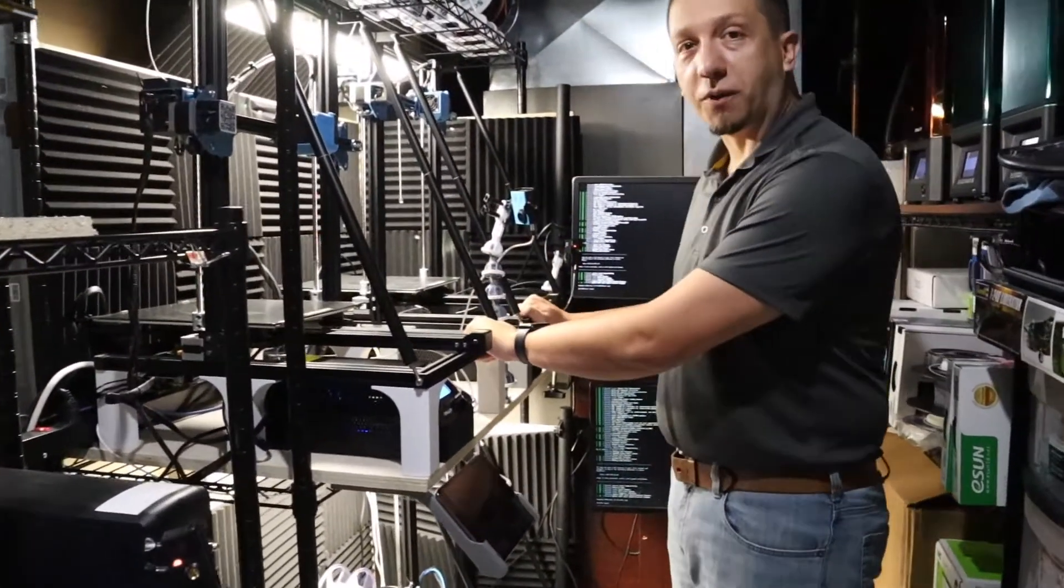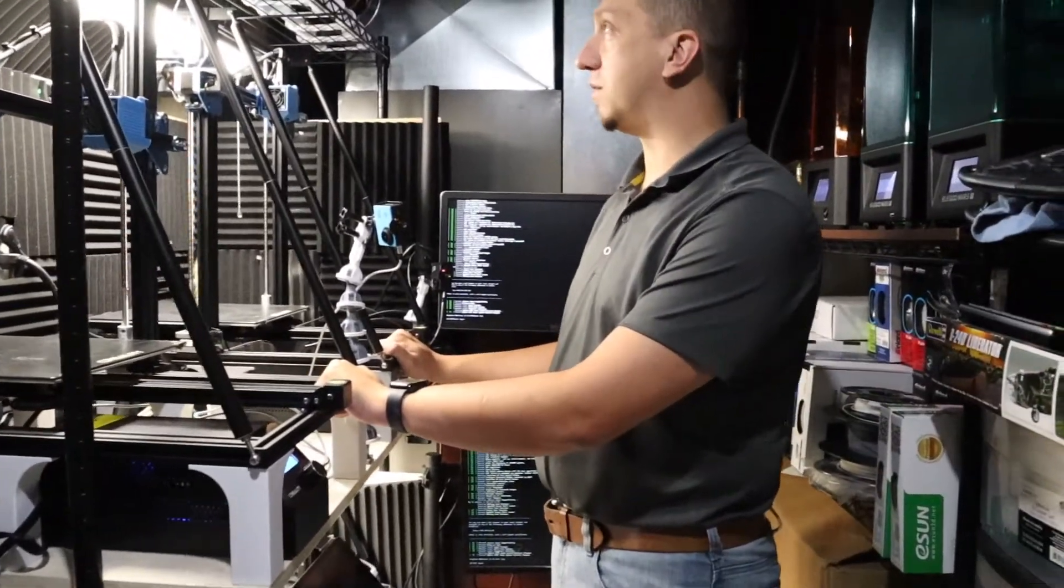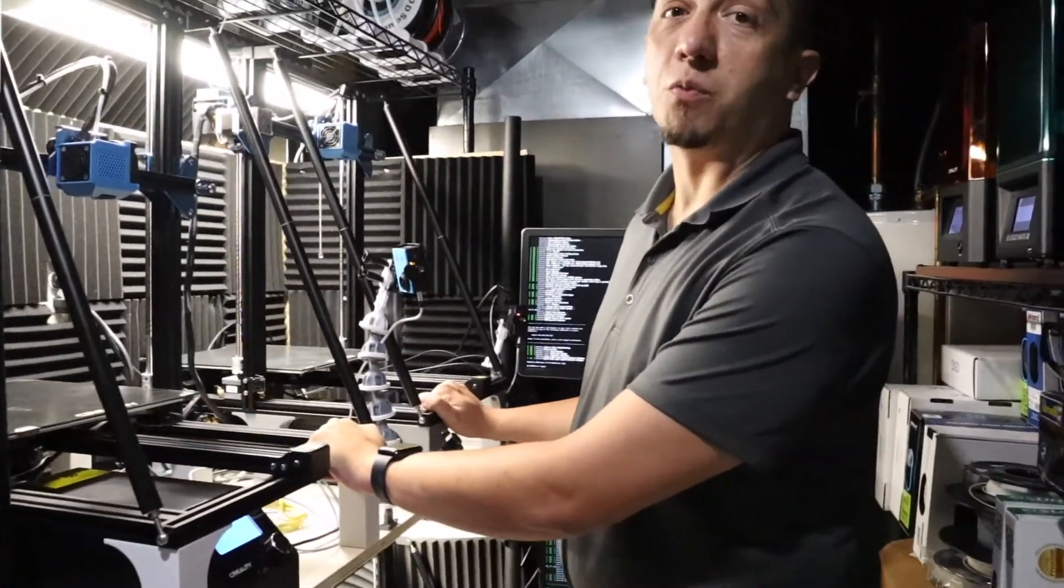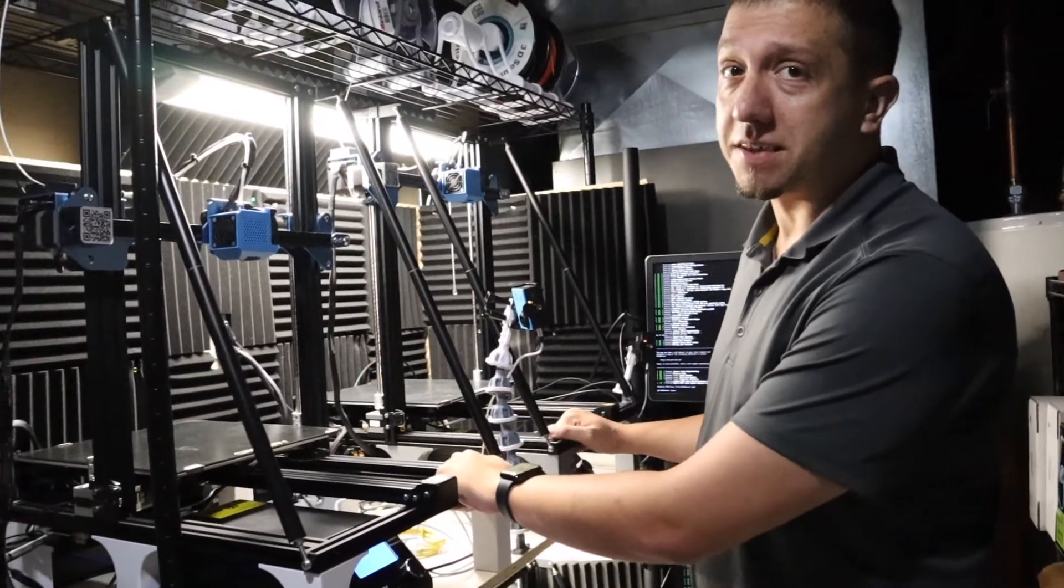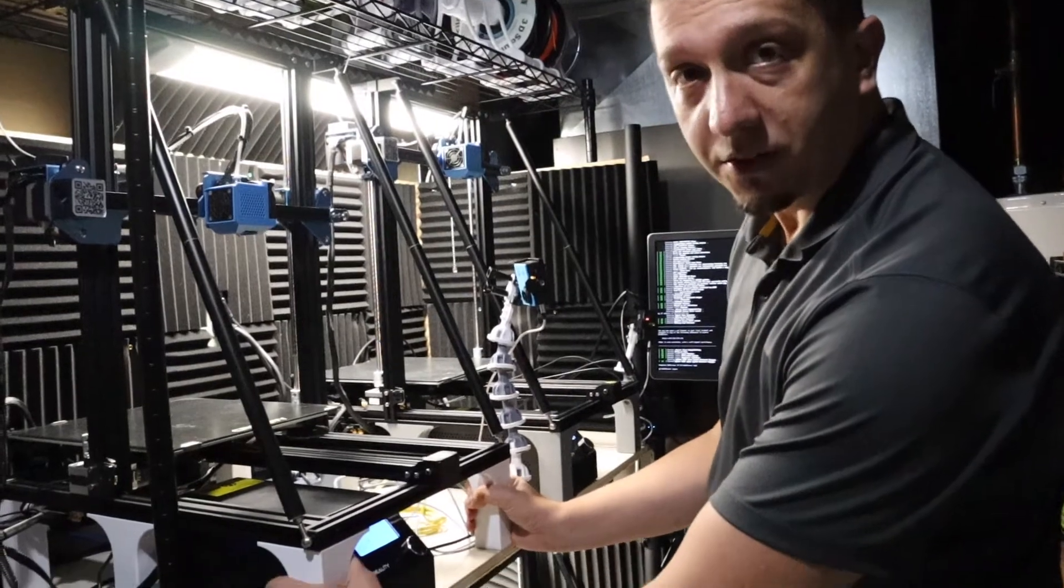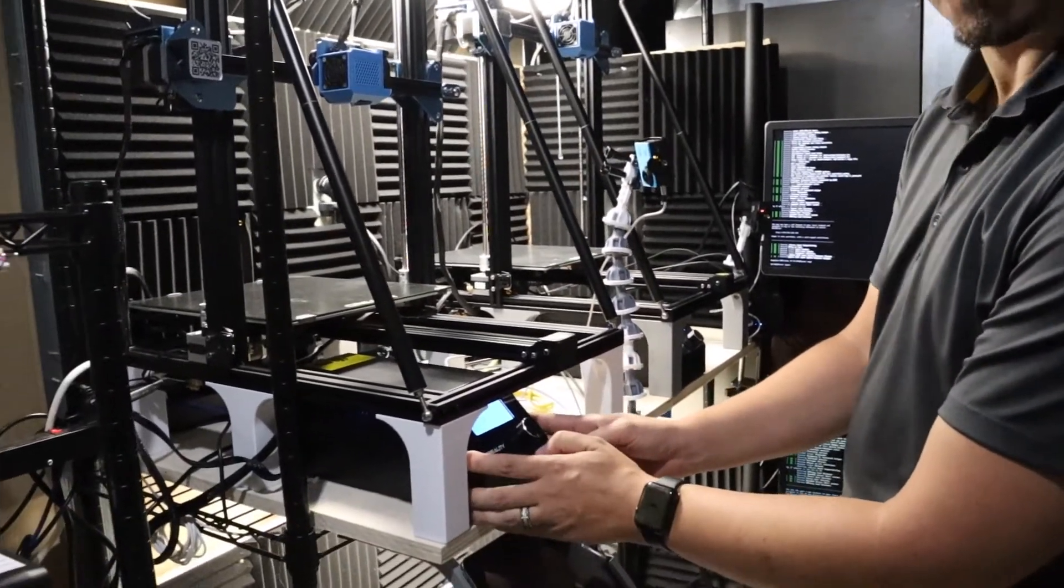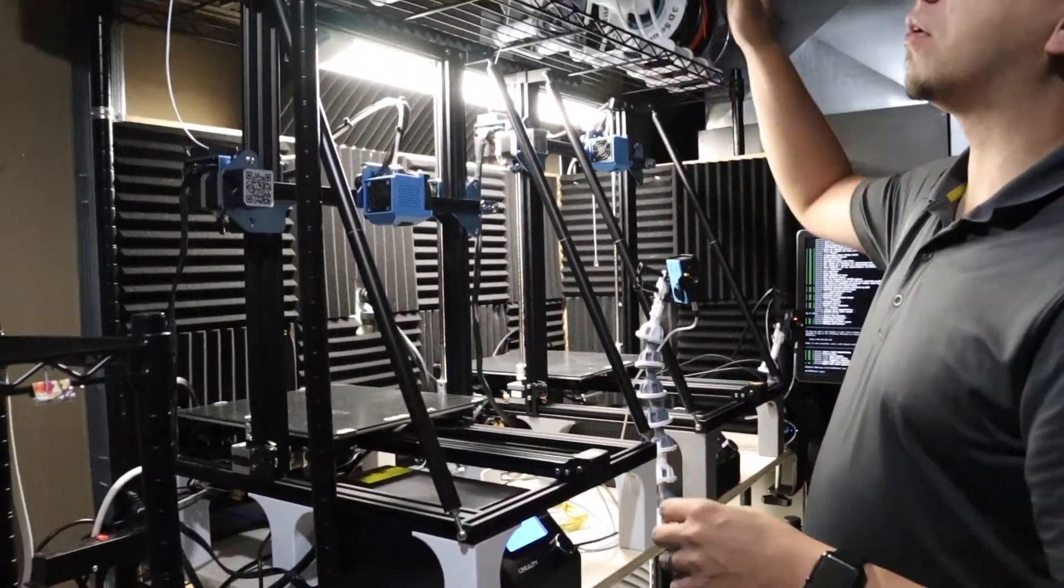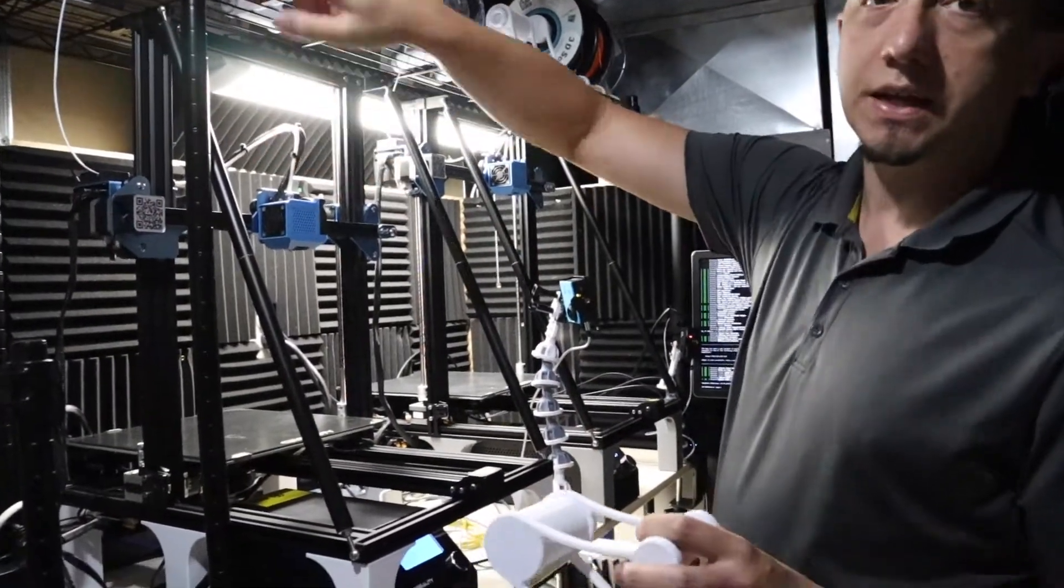These two right here become my workhorses. These are my CR10 V2s. These things are wonderful. If you're thinking about a large scale printer, these guys will do the job. You can see I've printed feet to raise them up so I could have the control box underneath.